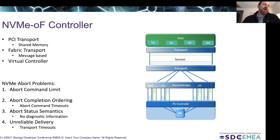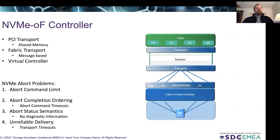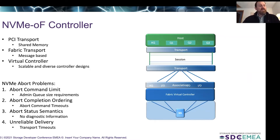Another issue is that in NVMe over fabrics, controllers are often depicted as a PCI controller on a fabric with an association. Early RDMA controllers actually just took RDMA IOQs and put them on top of a PCI device. But especially with the advent of FC NVMe and TCP, we really have a virtual controller — which means more scalable and diverse controller designs. Large storage arrays are capable of scaling much more IO, more IOQs, more admin queues, more controllers. This really exacerbates the problem with the abort command limit, making all of the problems with the abort command worse.